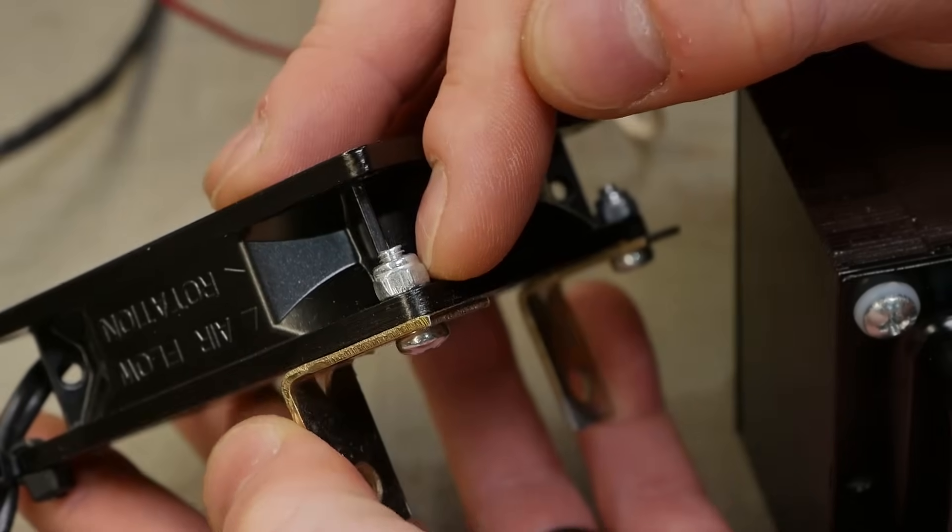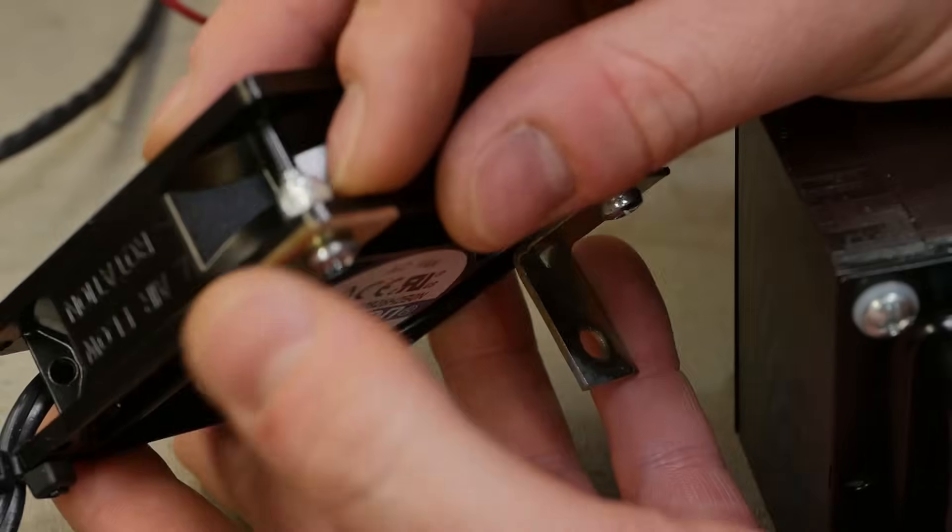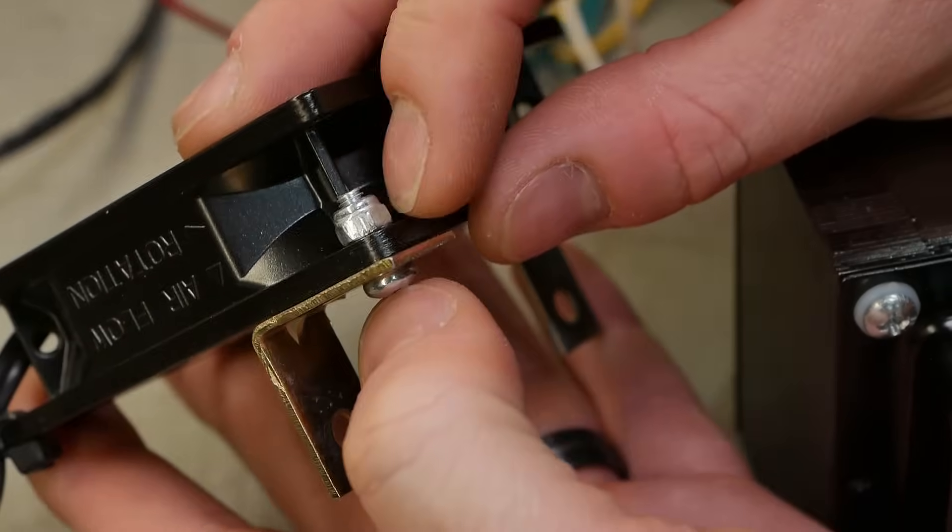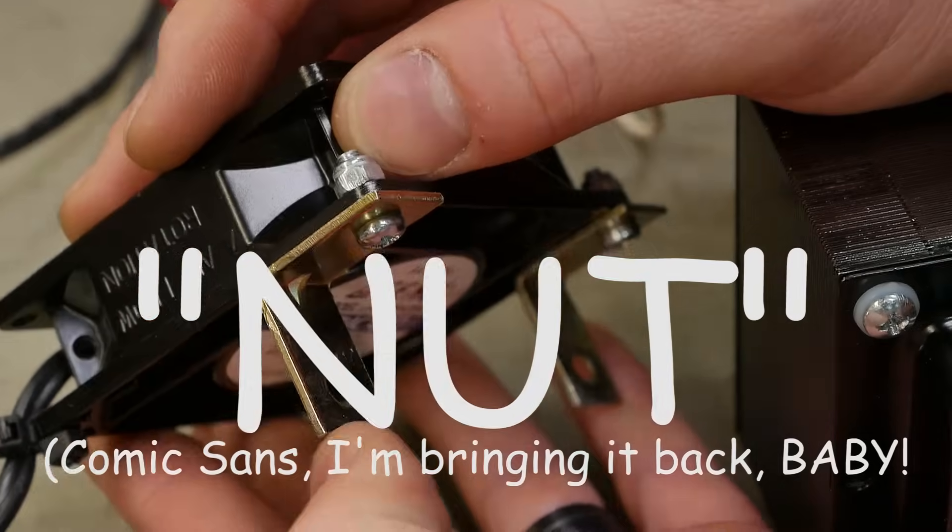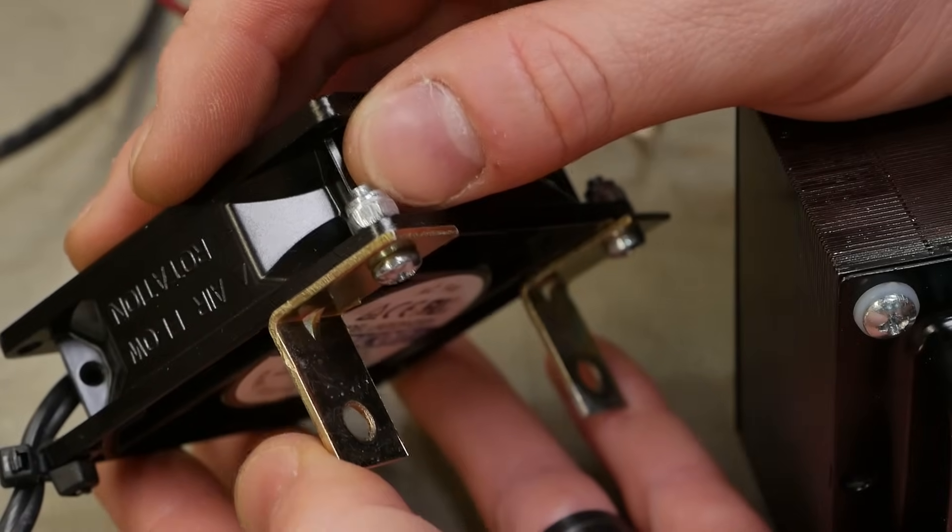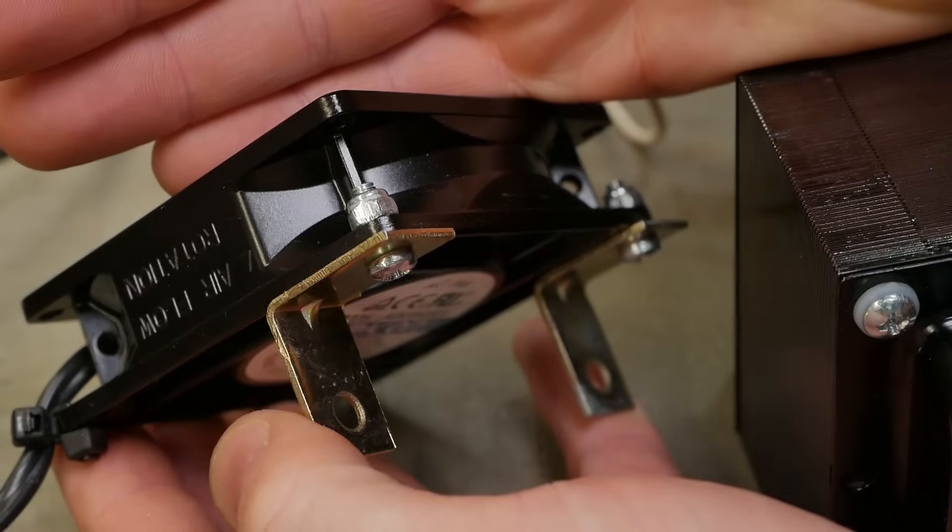They got the right idea here—just a metric screw with a nylon lock washer. Solid as, bro. Don't know why they do that there and then something completely different on the other end of the bracket, but anyway, I digress.